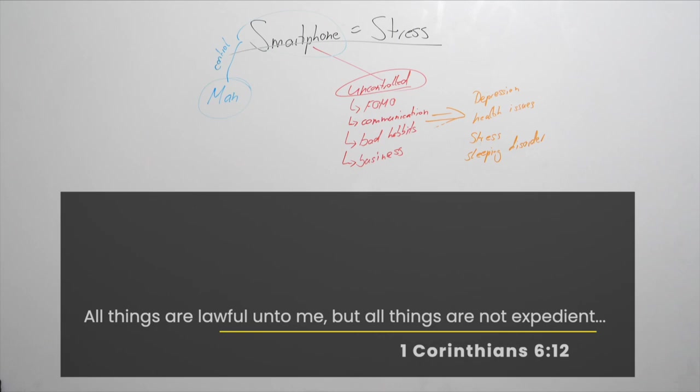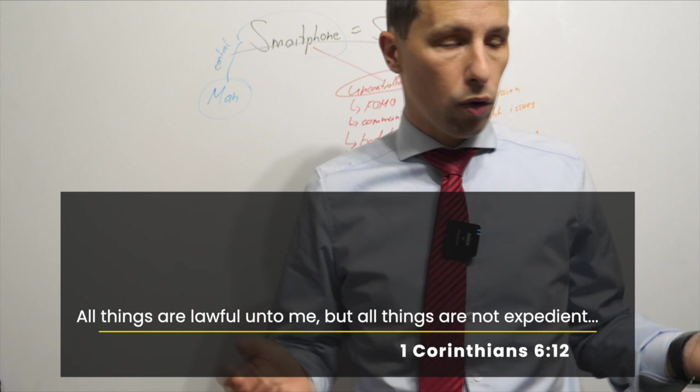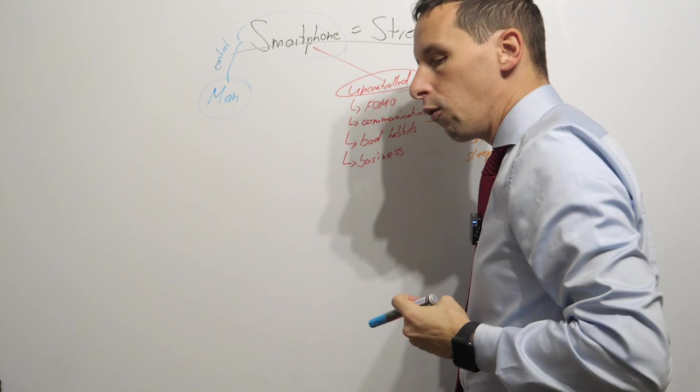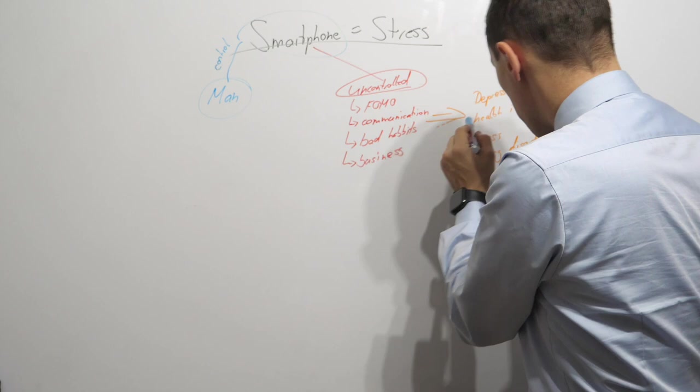All things are lawful under me. All things, even a smartphone, even a TV for that matter. But all things are not expedient. Not everything you should have. Because once you have it uncontrolled, once you cannot control the thing anymore and it controls you, you're going to face problems.